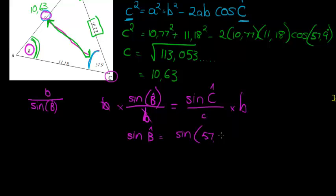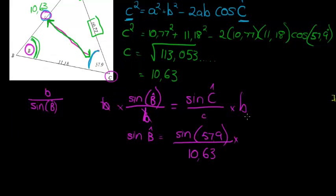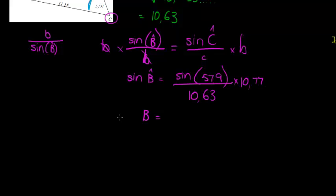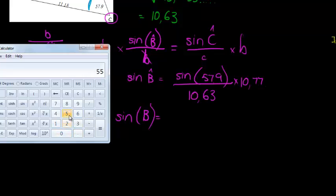When we substitute, sine of B is equal to - now I'm just multiplying the B on both sides - sine of angle C, which is 57.9, divided by side length C, which is what I calculated: 10.63, times B, the side length B, which is 10.77. Remember, this is what I get for sine of B - that's not the angle B.